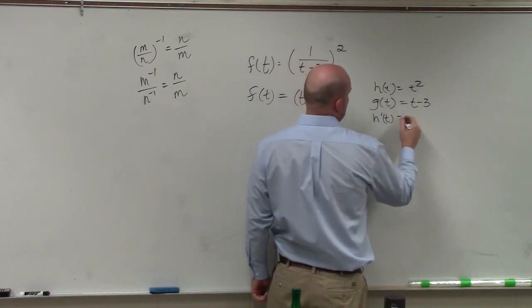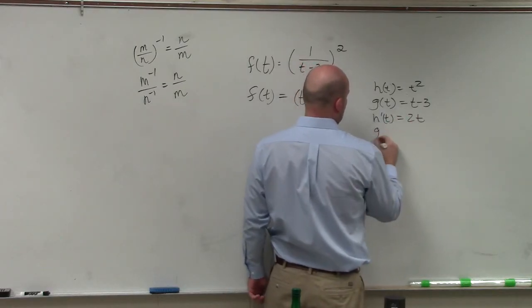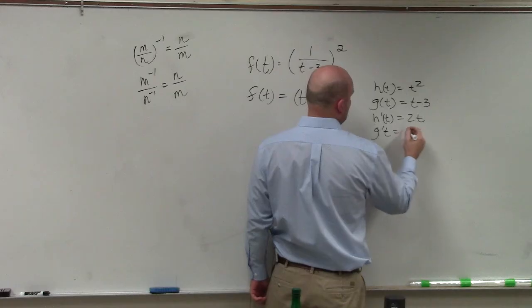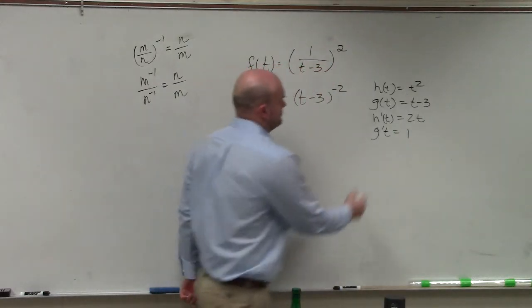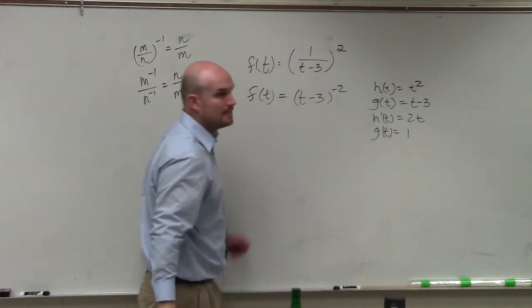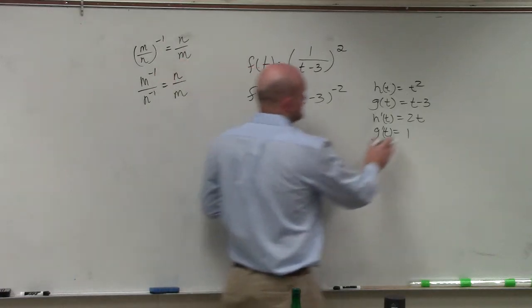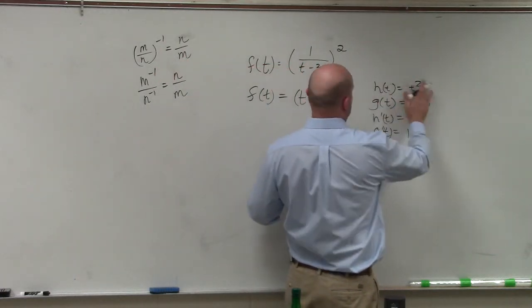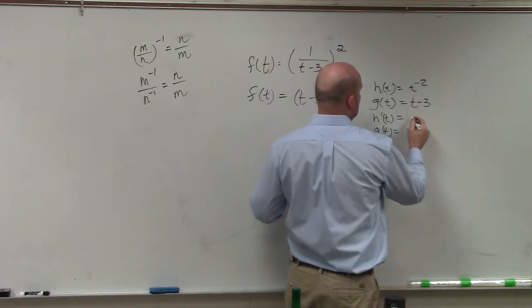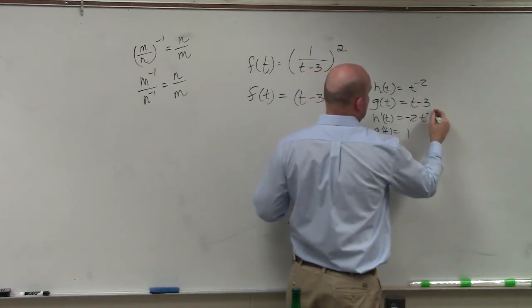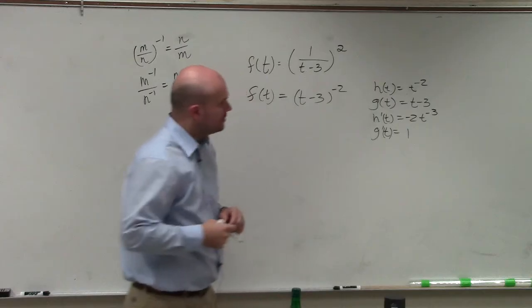h prime of t equals 2t. And g prime of t equals 1. I'm sorry, that's a negative 2 - that's t to the negative 2nd power. So therefore, that's negative 2 t to the negative 3rd power. Correct.